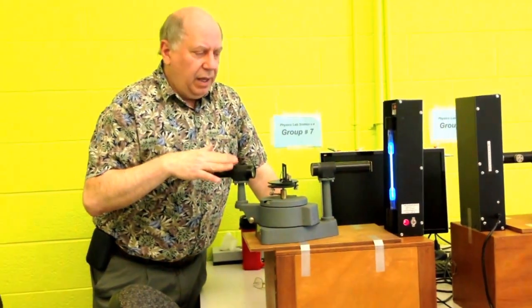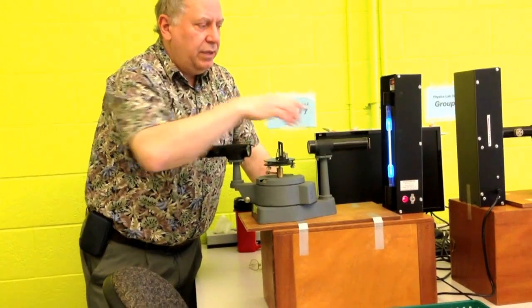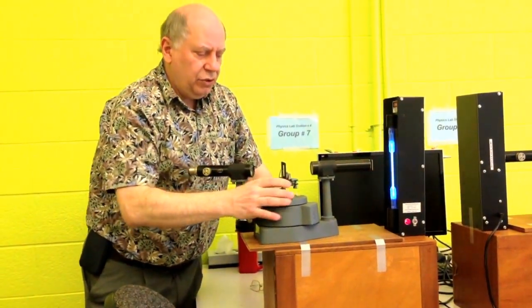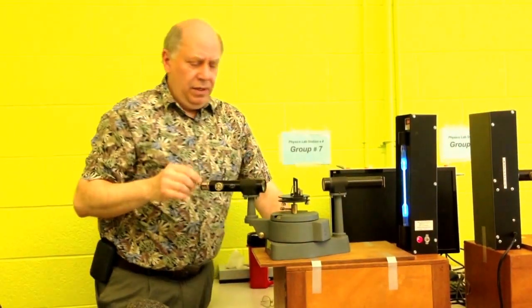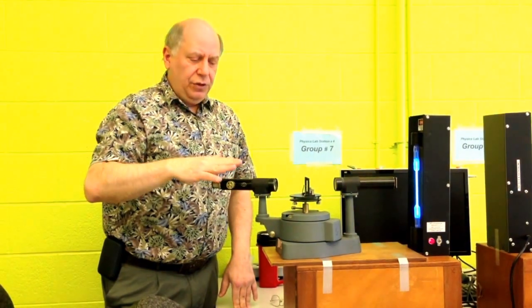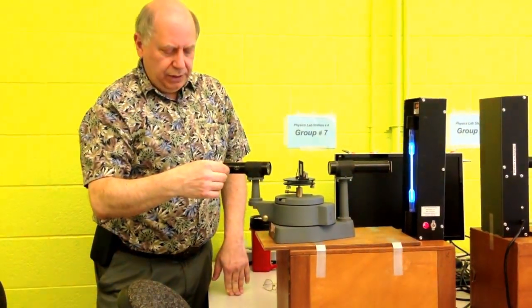So how do we set up this experiment to be able to break up this light into its individual color components and do the analysis and determine what gases are present? Well, first of all, we have to set up this spectrometer. And the first thing we have to do is do what I was doing a few minutes ago.